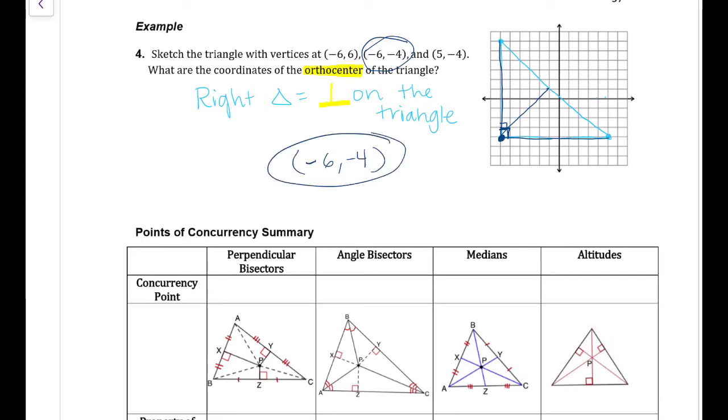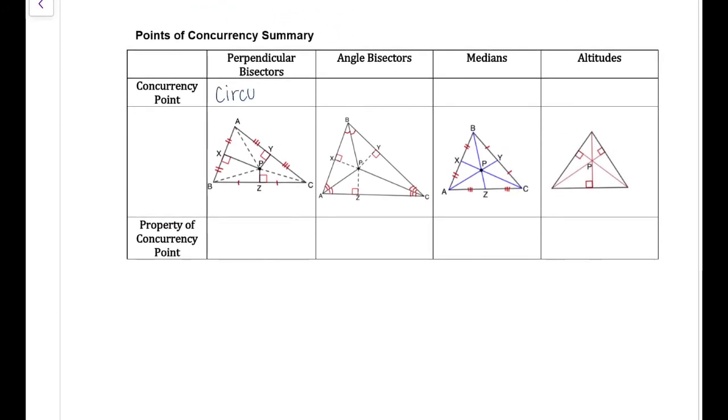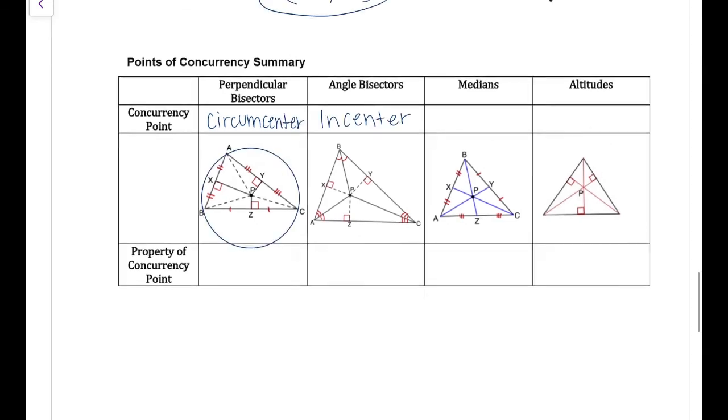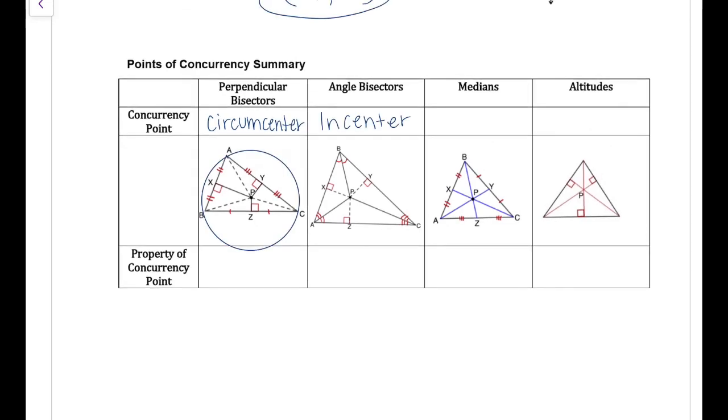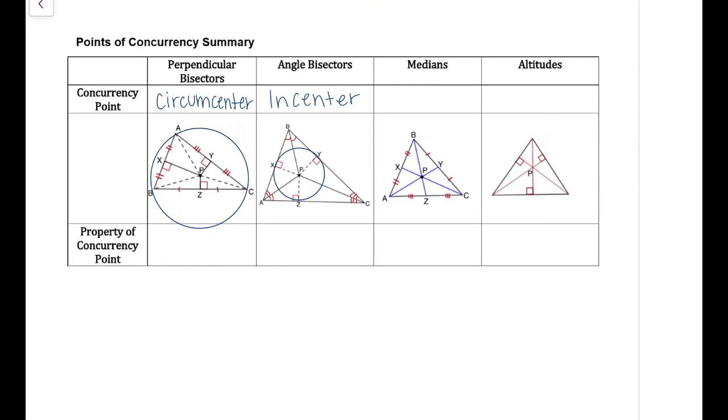We've learned four types of concurrency points. The circumcenter makes a circle around the outside vertices. The incenter makes a circle on the inside of the circle with the perpendicular bisectors.